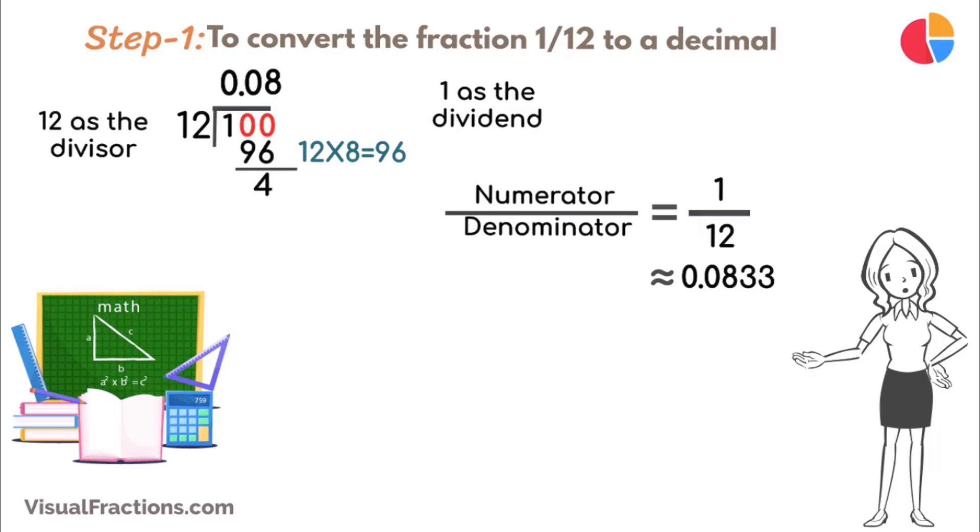Next, bring down another 0 to make it 40. 12 goes into 40 three times, updating the quotient to 0.083. Multiply 12 by 3 to get 36, and subtract this from 40, leaving a remainder of 4.